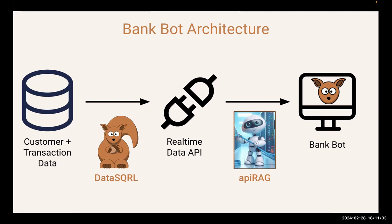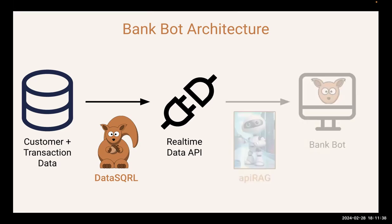Now let's dive into what exactly we're doing for each of these components. The first thing is how do you get from raw data streams — Kafka streams, Kinesis streams, data in an S3 bucket — any kind of data that arrives raw. If you work for a large organization, you have hundreds of these data sets sitting everywhere. How do you take that data and build a real-time data API that satisfies an SLA, is robust, has low latency, and is scalable?